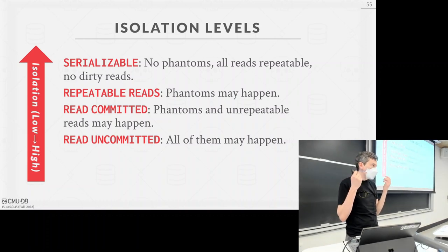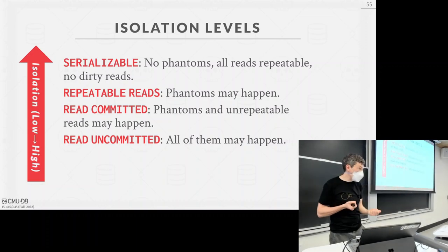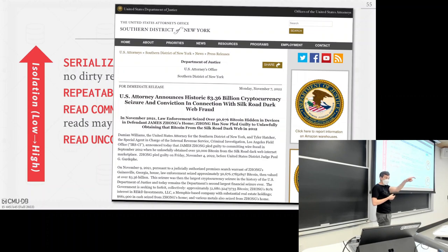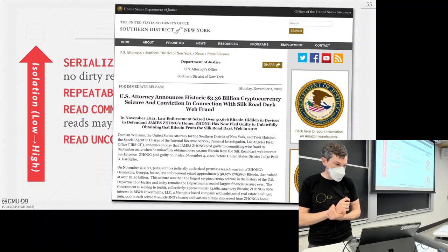Here's a real-world example: a guy was just busted for hacking 3.33 billion dollars in bitcoin back in 2012. The attack was simple because whatever exchange they used on Silk Road wasn't using transactions. He would issue around 200 withdrawal requests at the exact same time. The logic on the web server was: check whether your account has this amount, if yes then allow withdrawal. All 200 ran simultaneously, all checked the balance at the same time, and all withdrew — bleeding them dry.